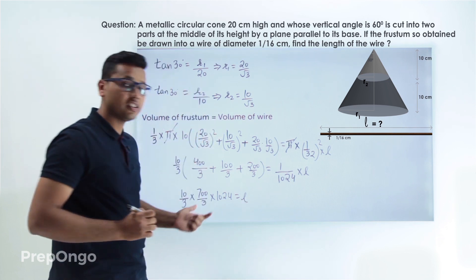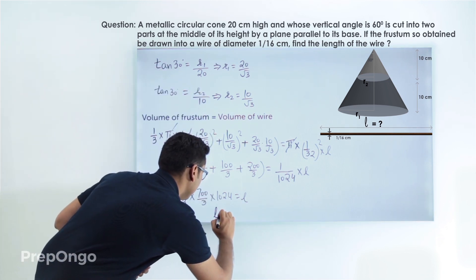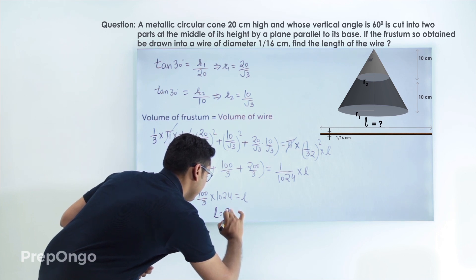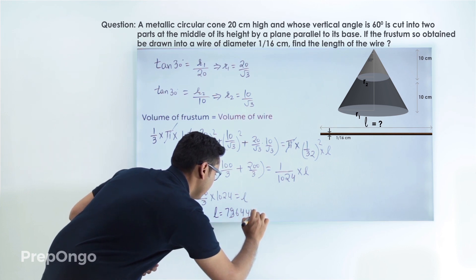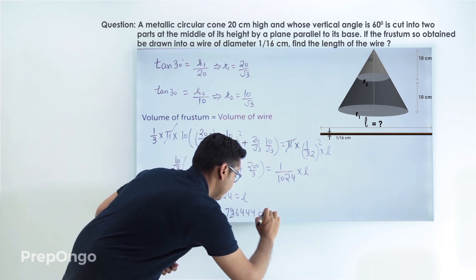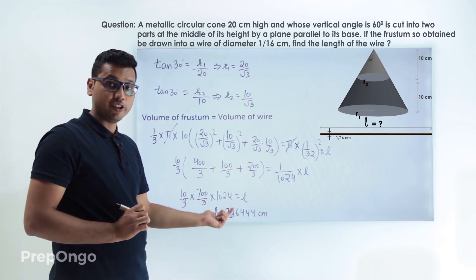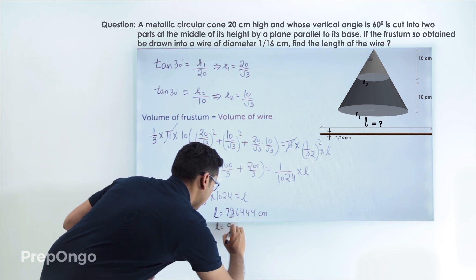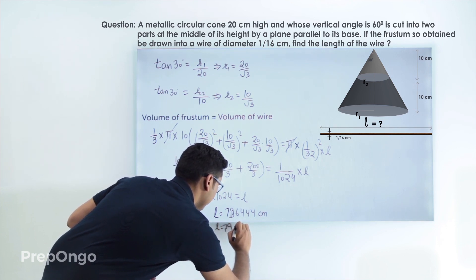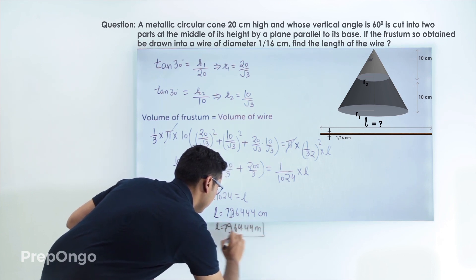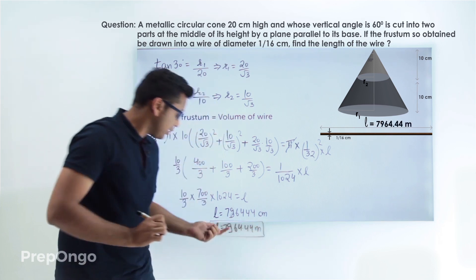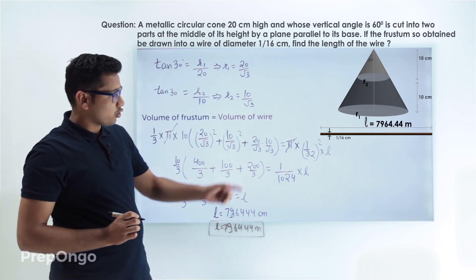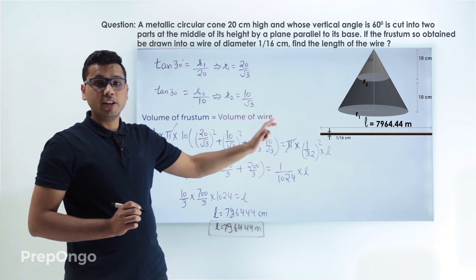Now if we further solve this we will get the value of L to be 796444.44 centimeters. And if we convert this value into meters we will get L will be equals to, we will just have to divide by 100. So this will be 7964.44 meters. So this much length wire will get by drawing this frustum into the wire.